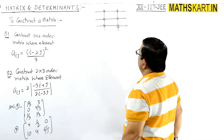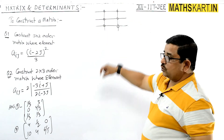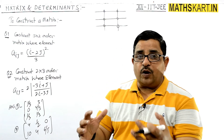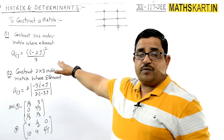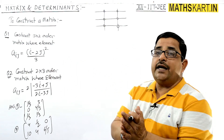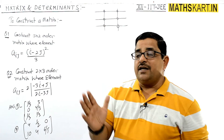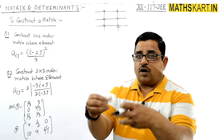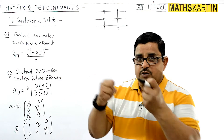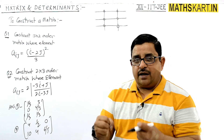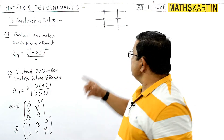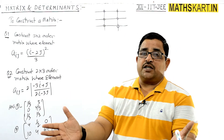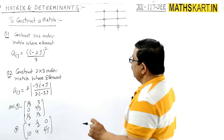The elements will be a11 and a12, and so on. We will place each element's i and j values into the formula — denoting which row and which column — put the value in to solve, and the corresponding element will come out. So we will find all 6 elements and construct the matrix.